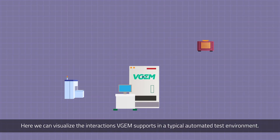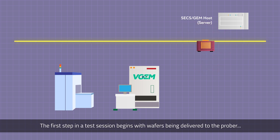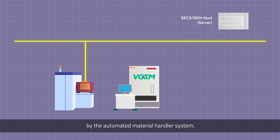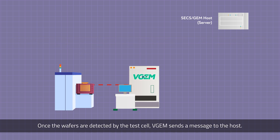Here, we can visualize the interactions VGEM supports in a typical automated test environment. The first step in a test session begins with wafers being delivered to the prober by the automated material handler system. Once the wafers are detected by the test cell, VGEM sends a message to the host.